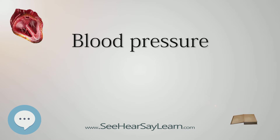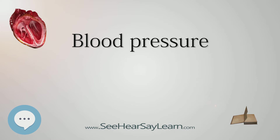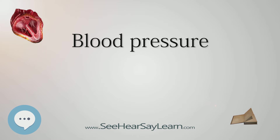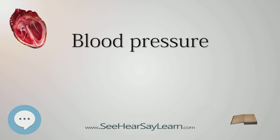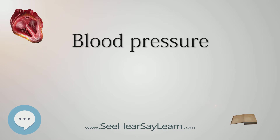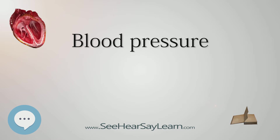Blood pressure is influenced by cardiac output, total peripheral resistance, and arterial stiffness, and varies depending on situation, emotional state, activity, and relative health or disease states. In the short term, it is regulated by baroreceptors, which act via the brain to influence the nervous and endocrine systems.